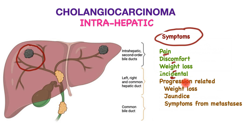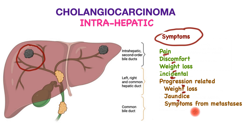However, if this tumor progresses and spreads to other parts it may produce more specific and worrying symptoms such as weight loss or jaundice. If it gets big enough or starts obstructing the main bile tube, patients may notice their eyes going yellow and their urine becoming very dark. Symptoms from more distant spread or metastases may unfortunately also present as the first symptom.